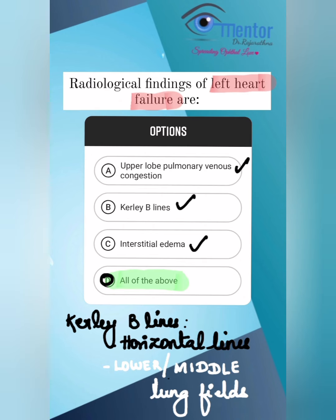Question number three — left-sided heart failure. What are the radiological findings? Upper lobe pulmonary venous congestion, curly B lines. What are curly B lines? These are dense horizontal short lines seen in the lower and middle lung fields, and also there is interstitial edema.